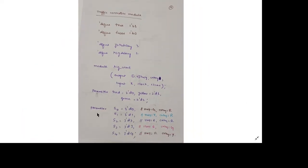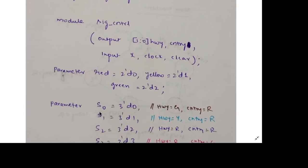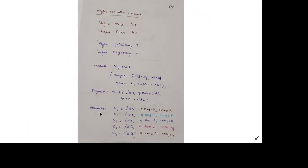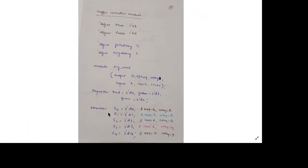Another parameter is used here. Five states are declared using the parameter keyword. These are 3-bit representations, where 000 indicates the state of highway green and country red — this is the default or beginning state.